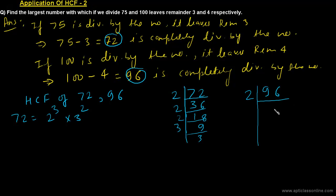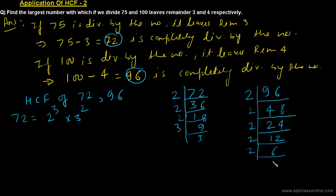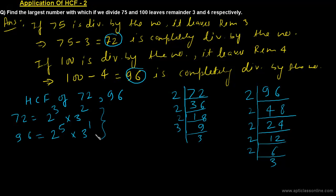Similarly for 96: 96 = 48 × 2 = 24 × 2 × 2 = 12 × 2 × 2 × 2 = 6 × 2⁴ = 3 × 2⁵. So 96 can be written as 2⁵ × 3¹ by way of prime factorization.